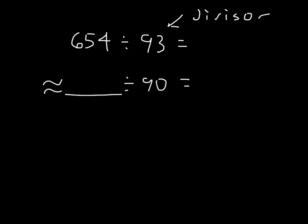So 654 divided by 93 is approximately something divided by 90. We then take a look at this 90 here, and we think of those multiples of 90. So I have 90 here, and then I have 180, 270. Then 90 times 4 is 360, 450,